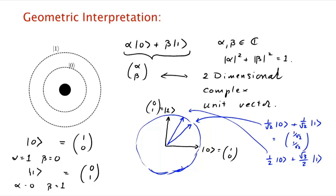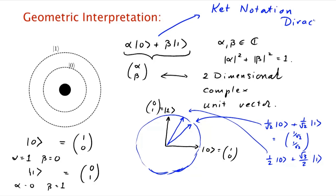We've learned that a qubit is a unit vector in a two-dimensional complex vector space. The notation we've been using is really another way of writing vectors — this is called ket notation, invented by the great theoretical physicist Dirac, so it's also called Dirac's ket notation. Placing zero inside the ket brackets makes it a vector — specifically the unit vector in the basis direction.